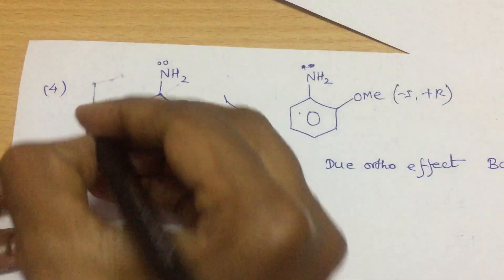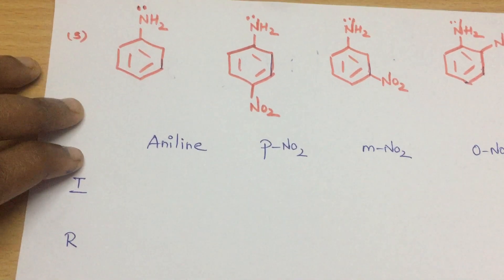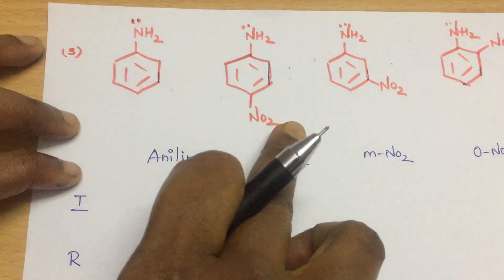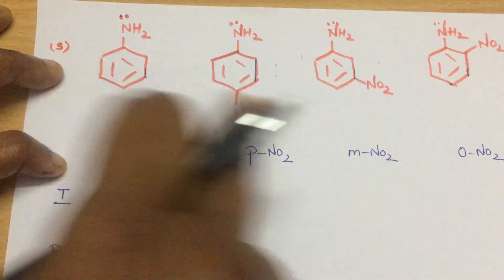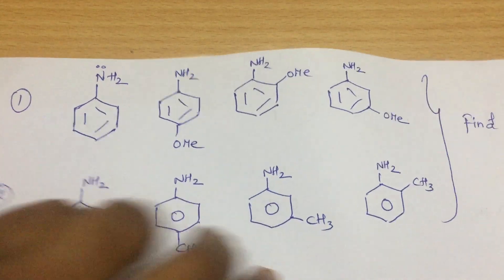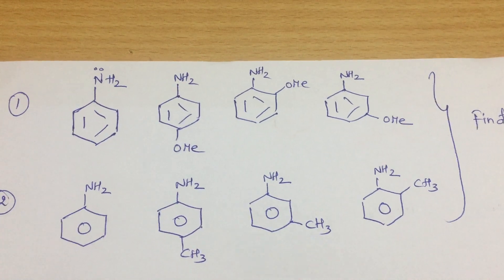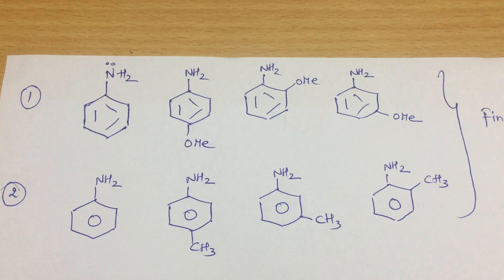This video has covered all the key concepts. For practice, arrange aniline, para-nitroaniline, meta-nitroaniline, and ortho-nitroaniline in basicity order. There are two more questions on the screen — find the basicity order for those as well. The answers will be discussed in the next video. Please try to solve these questions systematically. Thanks for watching!